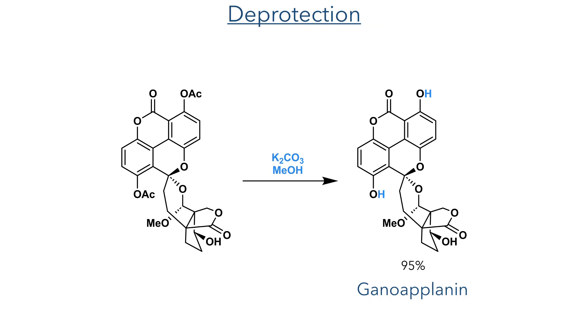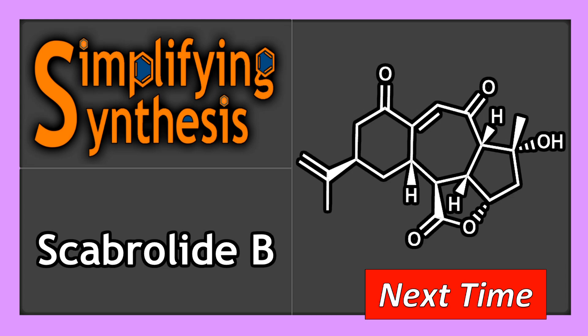With the lactone now in place, the synthesis was completed by a simple deprotection of the acetate groups using potassium carbonate and methanol, producing the target ganoaplanin in a 95% yield. That's all for this week. Join me in the next video where we will look at the total synthesis of scabralide B.